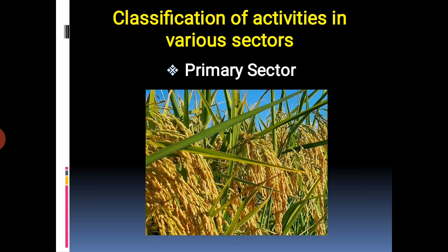Next point: classification of activities in various sectors. All activities are classified into three sectors — primary, secondary and tertiary. In the primary sector, all activities which harvest or extract natural products from the earth or natural resources are classified. These include agriculture, forestry, dairy farming, animal husbandry, fisheries, poultry farming and mining.